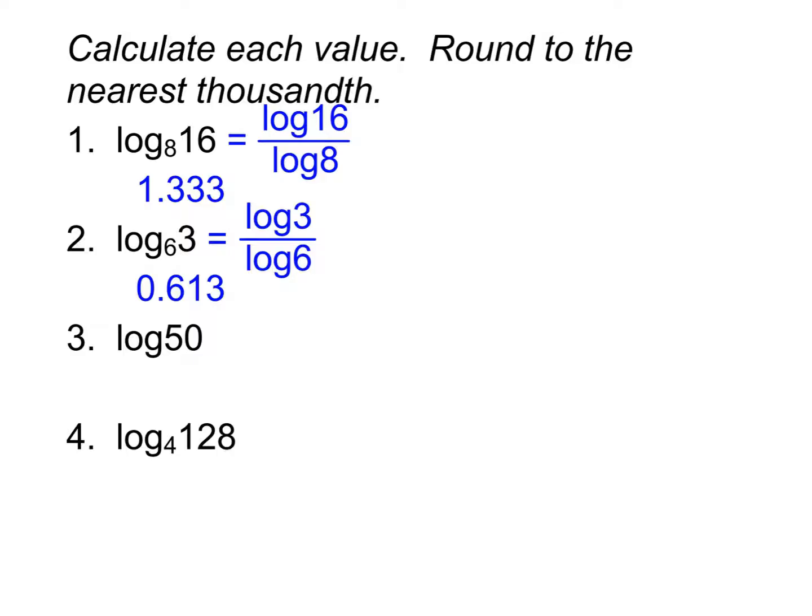Once you're able to get that one, go on to 2, 3, and 4. For number 3, we're figuring out what log of 50 is. Notice here there's no base written. There's two different ways you can do this. Some of you are going to be looking at it and saying, okay, so this is really log base 10, therefore I'm going to have to do log 50 divided by log 10. But if you do that, you'll get the same thing as if you just did log 50. The reason is because log 10 equals 1. This log 50 is already just in log form. We don't need to change the base. It's already in the right base. So you don't need to use the change of base formula with it.